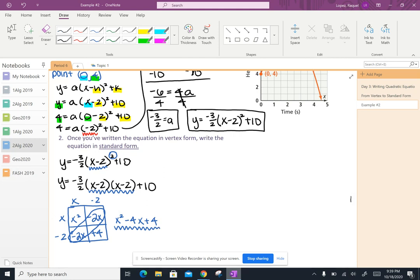So my equation now looks like y equals negative 3 halves x squared minus 4x plus 4. And then plus 10 all the way at the end. So once I've got to here